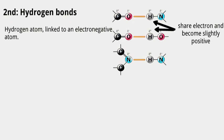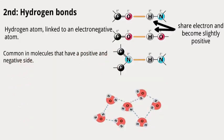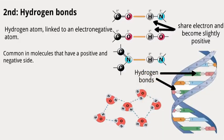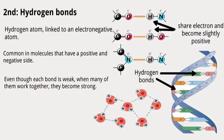These bonds are like tiny connections and are common in molecules that have a positive and negative side like water. In big molecules like DNA, these hydrogen bonds help hold things together, making structures stable. Even though each bond is weak, when many of them work together, they become strong. But the cool thing is, when needed, these bonds can be easily loosened to let enzymes do their jobs.